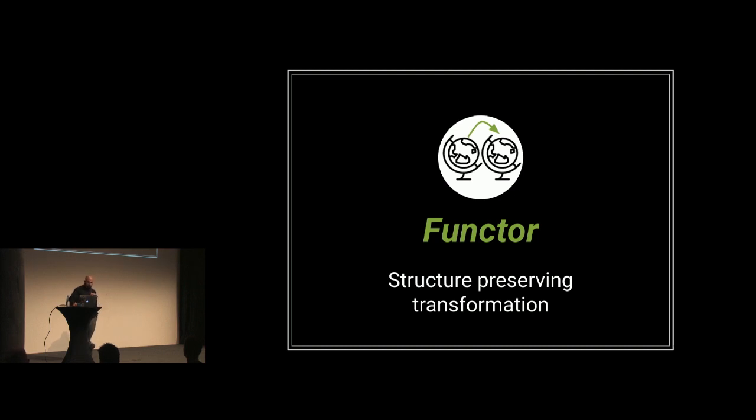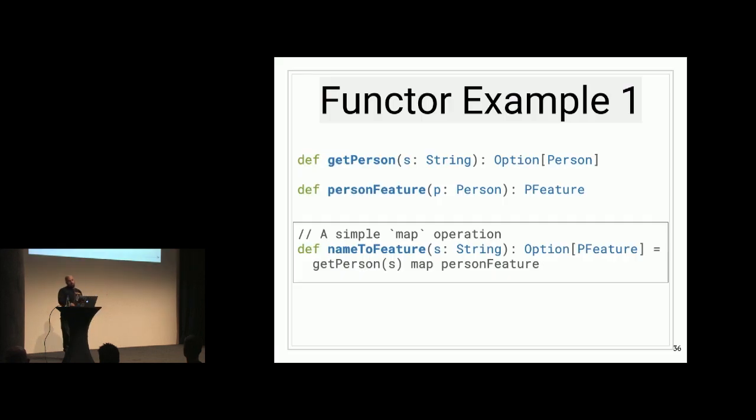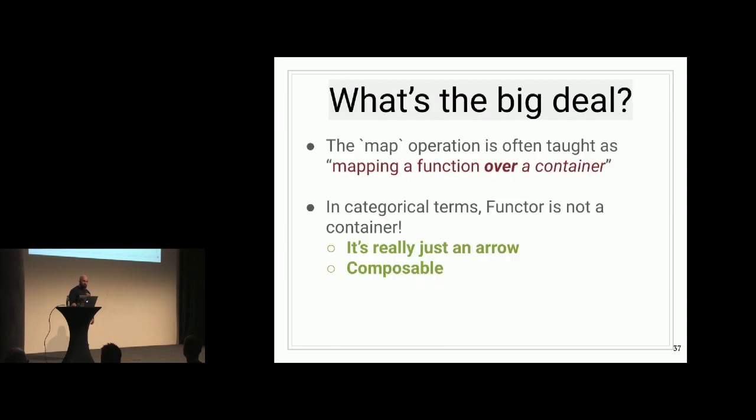Let's get into functors. Functors are structure-preserving transformations in category theory, and I think there's a distance between how Scala encodes them and how they are in math. So we'll look at a very basic code example. This should be a simple one. You have some function, getPerson, that takes a name, like a string, and through some database magic returns an optional person from the database. And then we have some function, person feature that takes a person, returns a feature that does a transformation, right? This is very straightforward. We just want to be able to compose them together to deliver this function that goes from string to feature, right? So all you do is you call getPerson with some string, you map person feature over it, now all of a sudden you have a function that does the thing that you want. What's the big deal, right? The map operation is often taught as mapping a function over a container. But in categorical terms, the functor is not a container, it's an arrow. It's a composable arrow at that, and we'll show why this is the case.